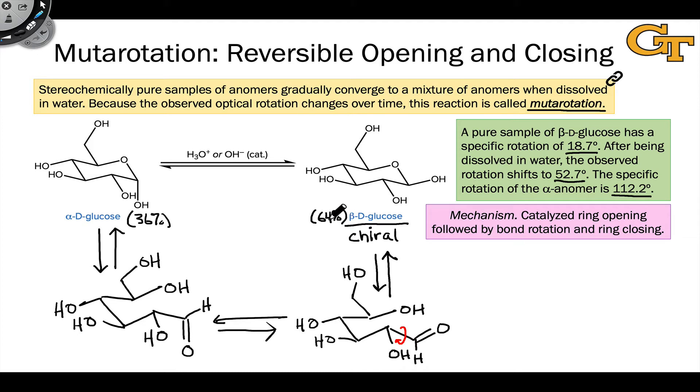In fact, if you do the math on weighting the specific rotations using these percentages, you'll arrive at a weighted rotation of 52.7 degrees, which is exactly how this ratio was determined experimentally.